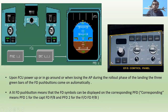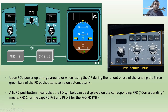Upon flight control unit power-up, or in a ground go-around, or when losing the autopilot during the rollout phase of landing, the three green bars of the flight director push buttons come on automatically. A lit flight director push button means that the flight director symbols can be displayed on the corresponding PFD — PFD1 for the captain's flight director push button and PFD2 for the first officer's.